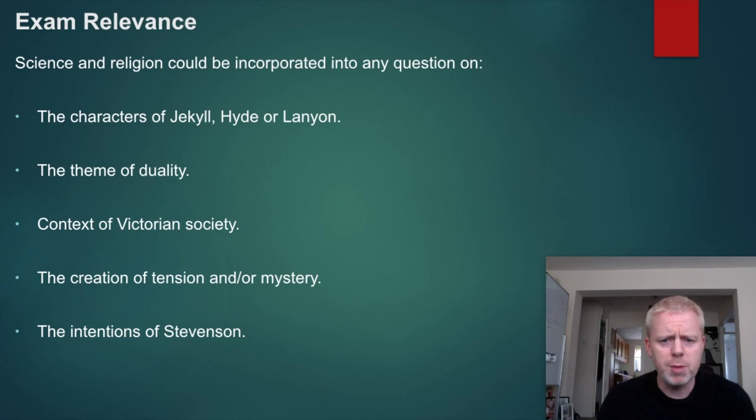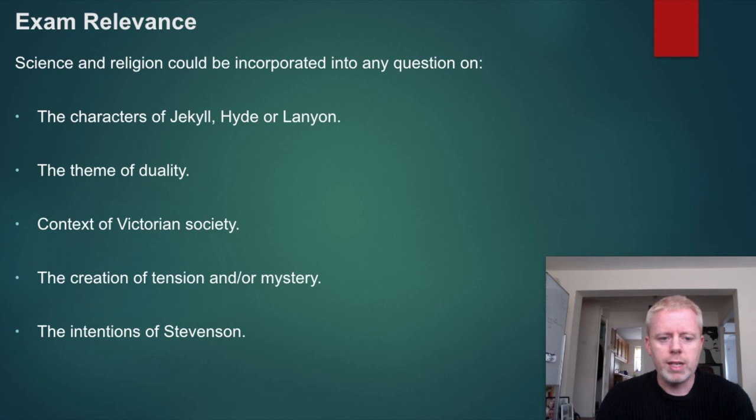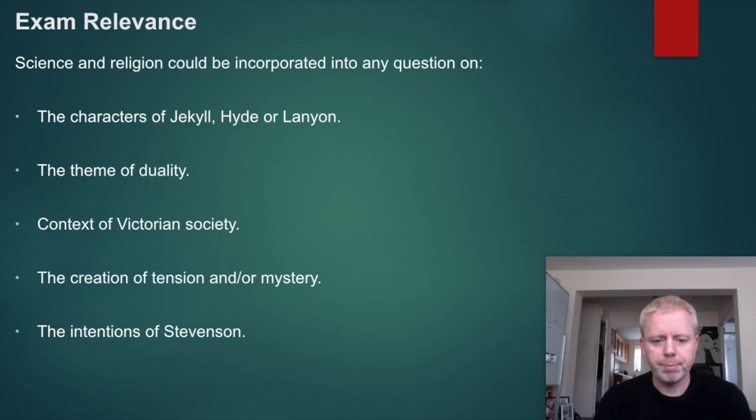For exam relevance: obviously any question on science and religion, but you can also incorporate it into questions on the characters of Jekyll, Hyde, or Lanyon, and possibly Utterson; the theme of duality; context of Victorian society, repression, and 1880s developments in science including Darwin; the creation of tension and mystery, especially linked to setting; and Stevenson's intentions — what message was he trying to attach to the theme of science versus religion?